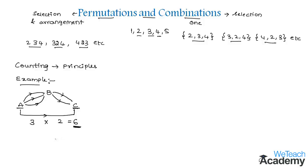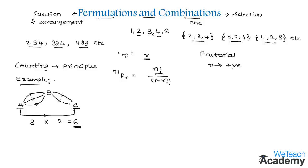This is how we approach examples on permutations and combinations, and there are certain formulas under the same concept. The permutations of N dissimilar things taken R at a time is given by NPR, where P represents permutation. The formula is N factorial divided by N minus R factorial. Now let us understand factorial notation — if N is a positive integer, the value of 1 factorial is 1, and N factorial equals N into N minus 1 factorial, where N must be greater than 1.